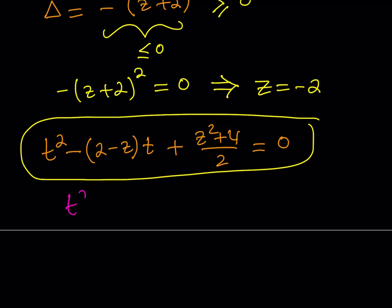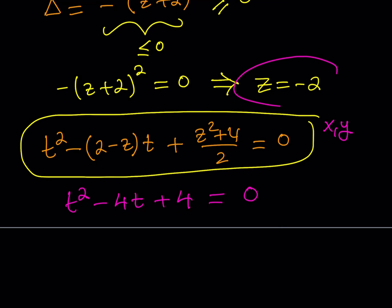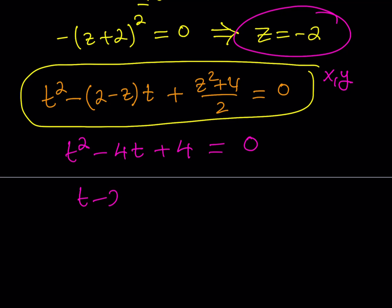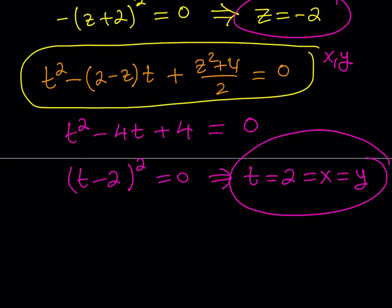Remember, x and y are the roots of this equation. The equation t squared minus 4t plus 4 factors as (t minus 2) squared equals 0, which implies t equals 2. So both roots are 2, meaning x equals 2 and y equals 2. Therefore our solution is (x, y, z) equals (2, 2, negative 2). This concludes the first method.